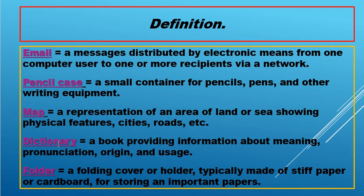Next, dictionary. A book providing information about meaning, pronunciation, origin, and usage. So it is a book — one of the supplies that provide, meaning gives, information and details about the meaning and definition. The meaning, the pronunciation — the grammar of that word — the origin, when that word started, and usage: how to use that word, whether for adjectives, for noun, for singular, for pronoun.